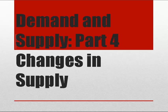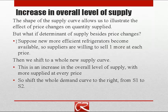Part three covered the basics of supply. Now let's think about what is going to cause changes in the overall level of supply. An increase in the overall level of supply is triggered by something other than a change in the price of the good itself. A change in the price of the good itself is a movement along a fixed supply curve.